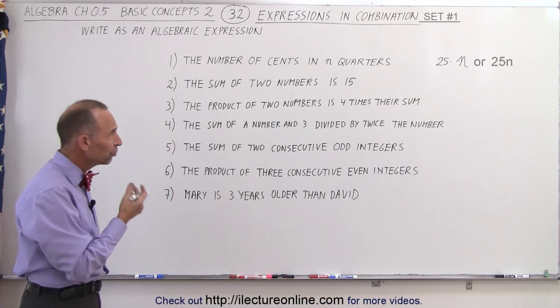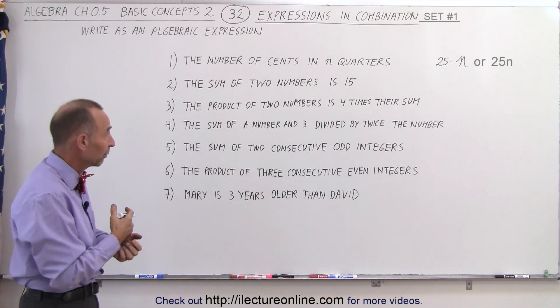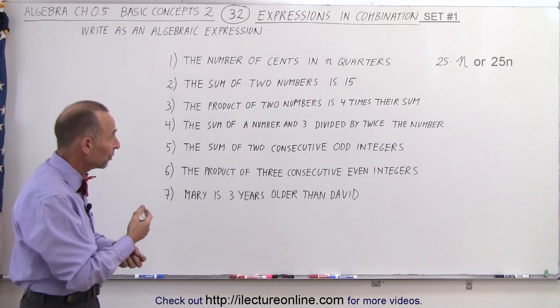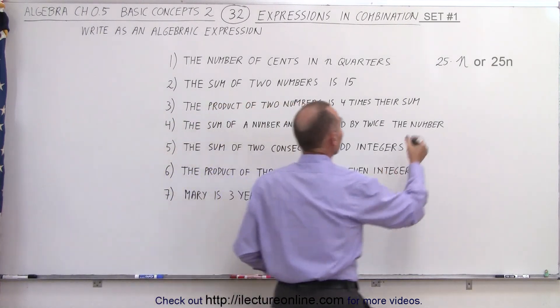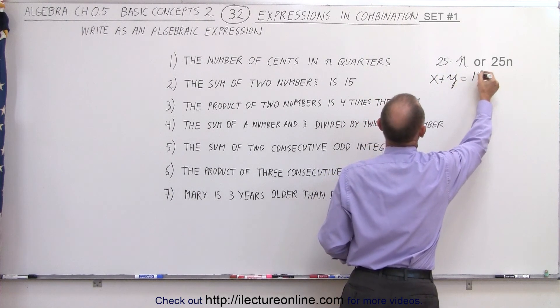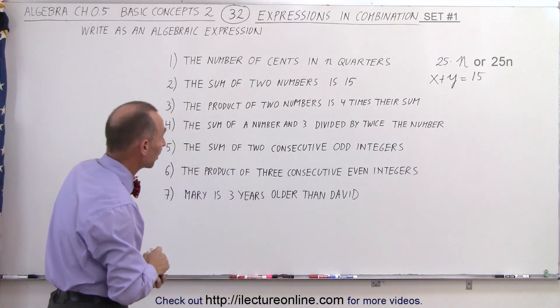The sum of two numbers equals 15. We don't know what the numbers are, so we're going to represent them by two variables, x and y. When we add them, we set that equal to 15. So x plus y equals 15. It's actually an equation rather than a statement or an expression.